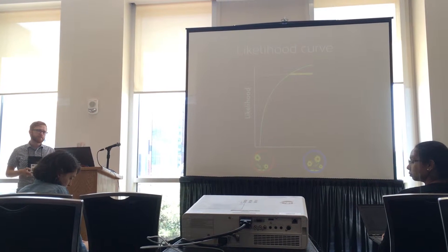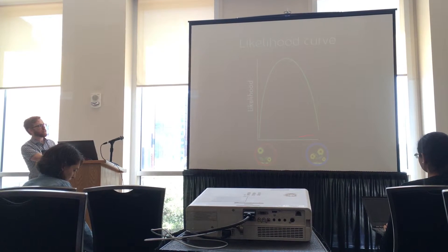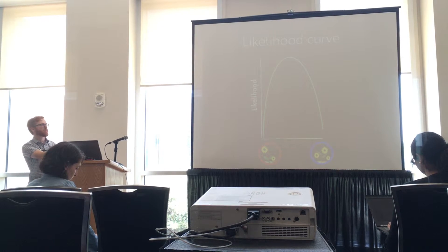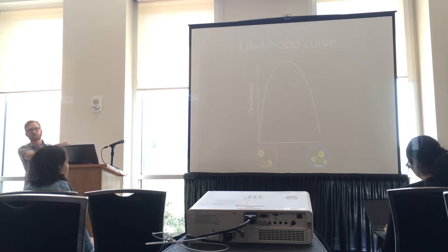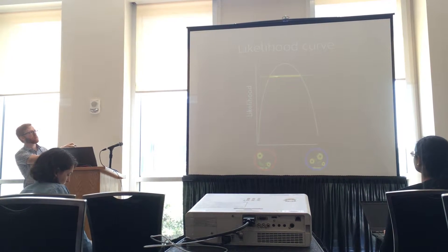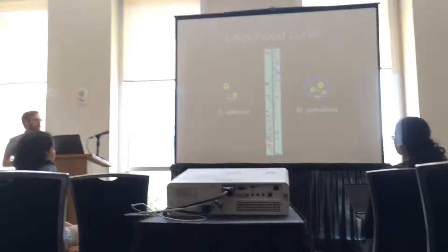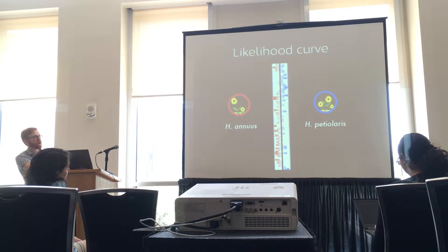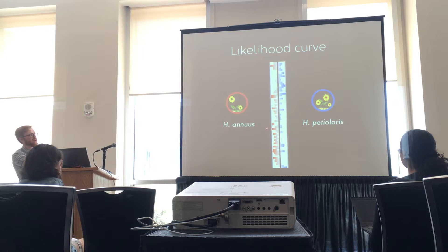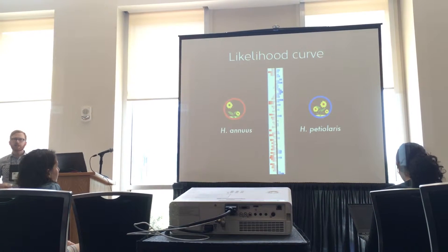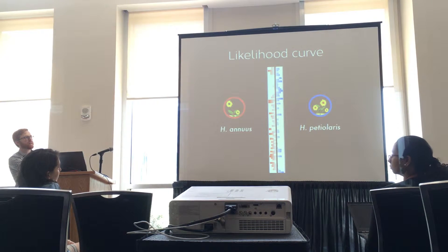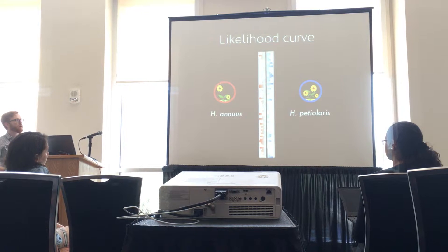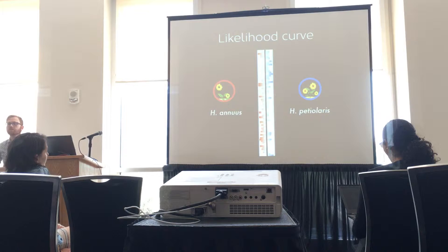One advantage of this method is that it distinguishes truly admixed regions — where the highest likelihood is right in the middle — versus areas where there's too little data, in which case the likelihood curve is very flat with a confidence interval spanning the entire range. So we can see when confidence intervals are wide, indicating uncertain assignment, versus regions that are more likely to come from just one of the parental species.